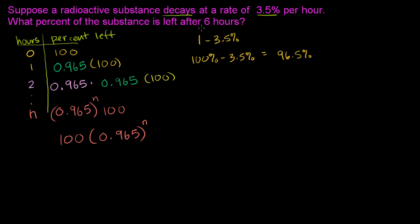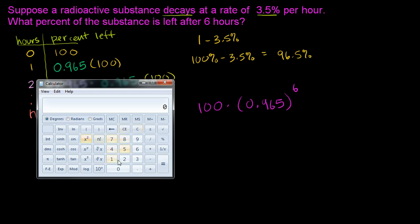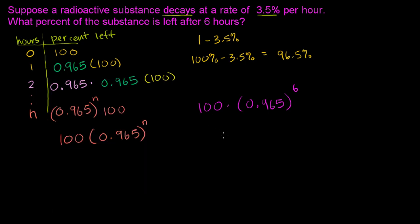Well, now we can answer the question. After six hours, how much are we going to have left? Well, we're going to have 100 times 0.965 to the sixth power left. And we could use a calculator to figure out what that is. Let's use our trusty calculator. So we have 100 times 0.965 to the sixth power, which is equal to 80.75. This is all in percentages. So it's 80.75% of our original substance. So 80.75%.